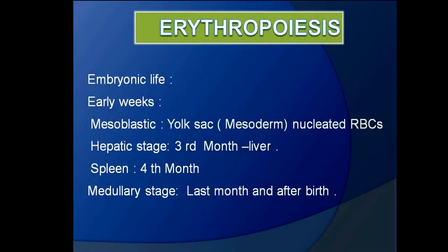The process of erythrocyte formation is known as erythropoiesis. It starts in early weeks of embryonic life — the mesoblastic stage — from the yolk sac, forming nucleated RBCs. From the third month of intrauterine life, RBCs are formed from the liver; this phase is known as the hepatic phase.